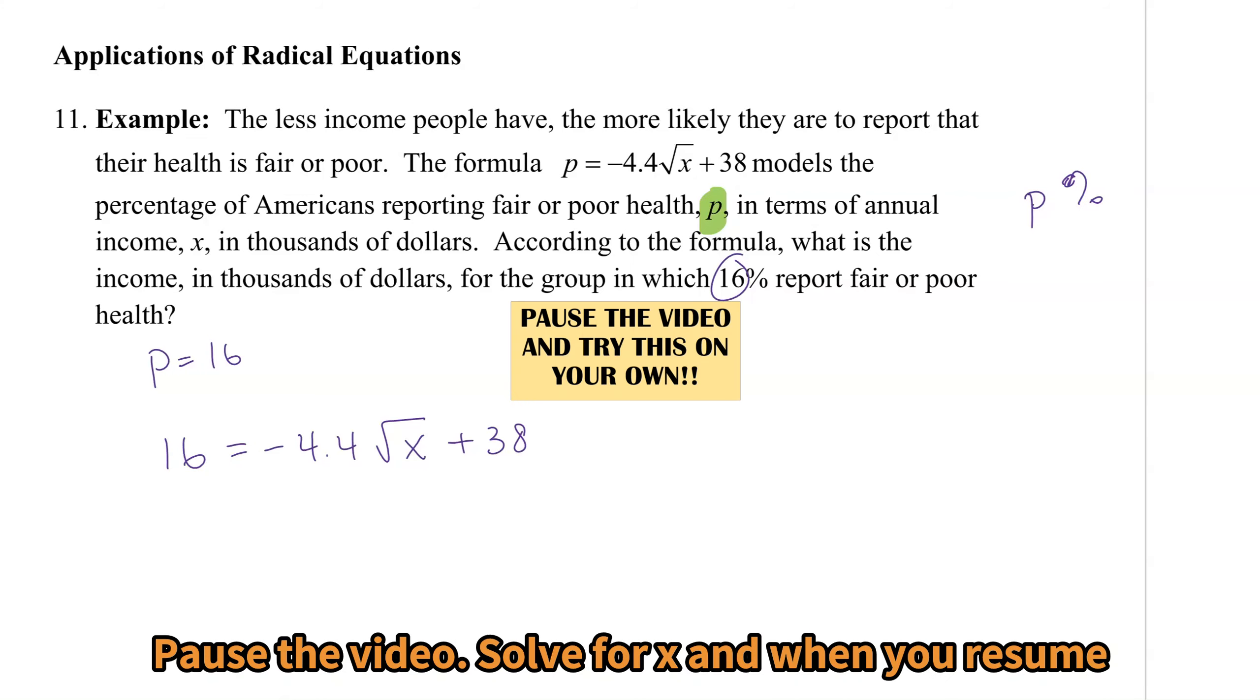And for number 11, did you get x equals 25? That means that for an income of $25,000, about 16% of people would report fair or poor health. This formula is created with past data, and it can be used to help analyze what's happening right now.